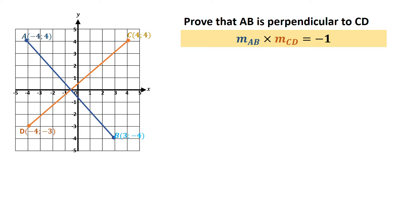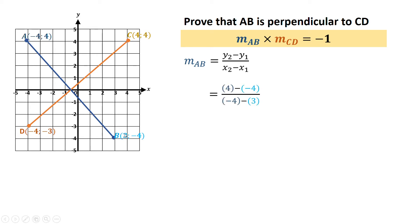So I can see that they're perpendicular but I need to prove it. I'm going to calculate the gradient of line AB using my gradient formula: y2 minus y1 over x2 minus x1. So my y's — I subtract them — I get 4 minus negative 4, and my x's: negative 4 minus 3. If I calculate that I get negative 8 over 7.